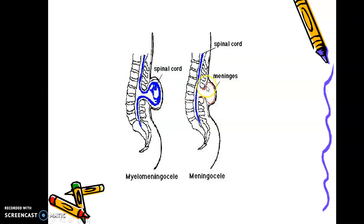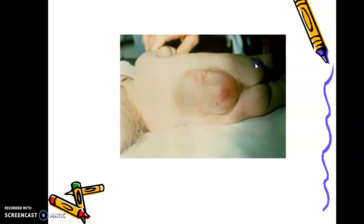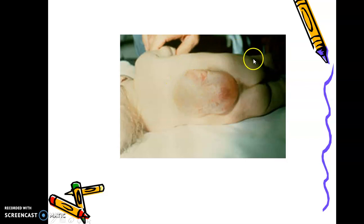In myelomeningocele the whole spinal cord protrudes out. Here the blue-colored spinal cord is protruding while the red meninges are also coming out. You can see a very severe case with the entire spinal cord protruding from the lower lumbar-sacral area. In another image, a neonate of about two months shows a huge affected area from lumbosacral to thoracic, and severe muscular weakness and deformity will develop as the child grows.